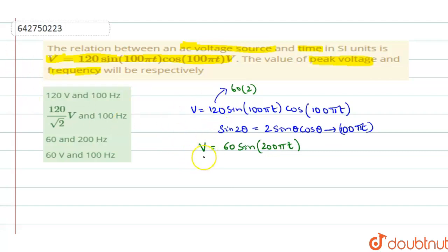The equation of the general form is V equals V₀ sine ωT. Now comparing these two equations, you can write the values. You can write V₀ value where V₀ is called peak voltage. So peak voltage is given to be 60 volts.